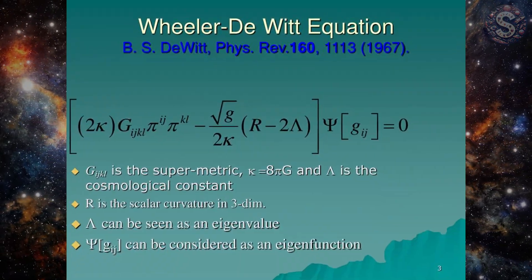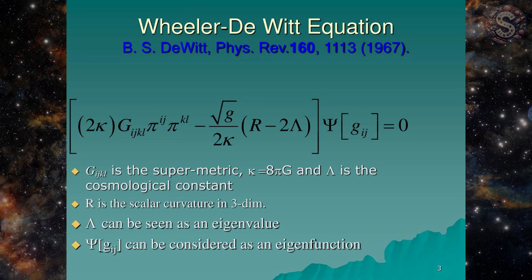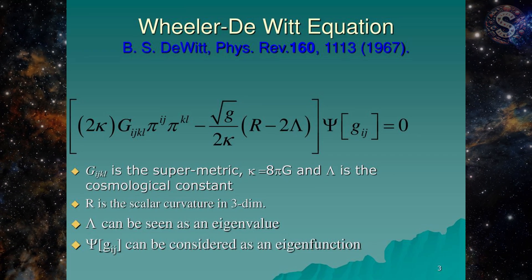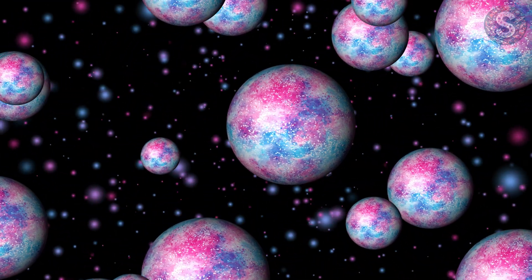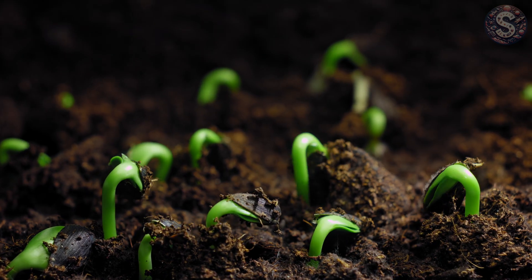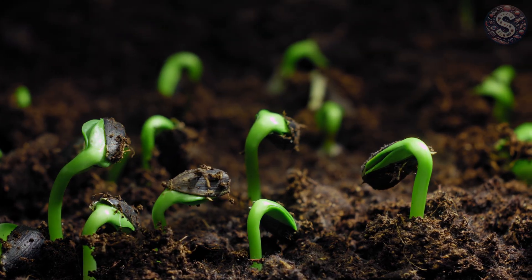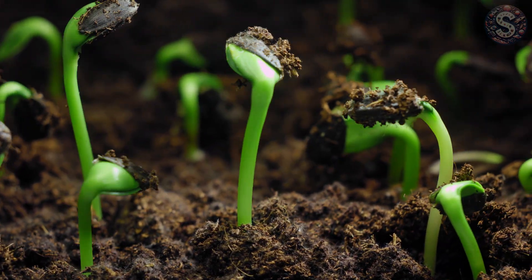Take the Wheeler-Dewitt equation, one of the central attempts at quantum gravity. Unlike almost every other equation in physics, it has no time variable. It describes the quantum state of the entire universe, but it doesn't evolve in time. It just is. That's unsettling, because our experience screams that time is real. Yet, the math that should describe the ultimate reality doesn't seem to need it.